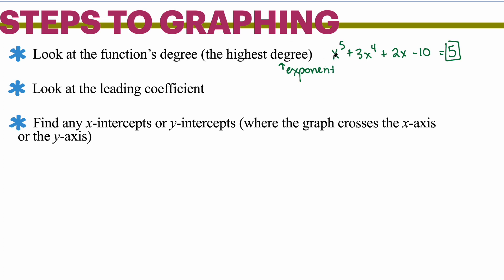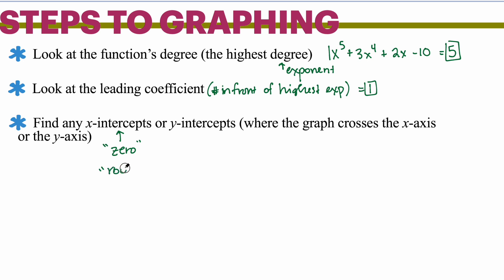And then the leading coefficient — in this example, the leading coefficient would be the number in front of the highest exponent, which would be a 1. And then you are looking for any x-intercepts. An x-intercept is the same thing as a zero, and it is the same thing as the root of the function. Just know that these three things mean the same thing. The y-intercept is where the graph crosses the y-axis. We are going to use these steps in order to actually graph functions.